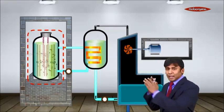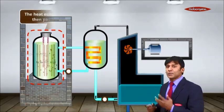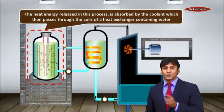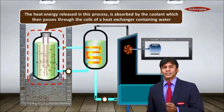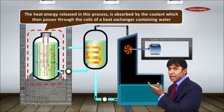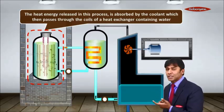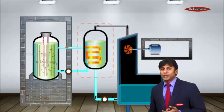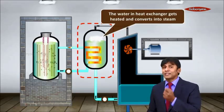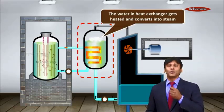In this particular section, heat is produced. The heat energy released in this process is absorbed by the coolant, which then passes through the coils of a heat exchanger containing water. The coolant goes to the heat exchanger, and the water in the heat exchanger gets heated and gets converted into steam.